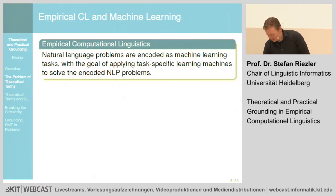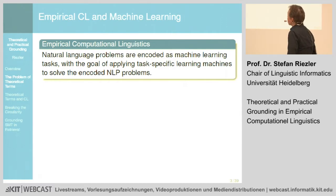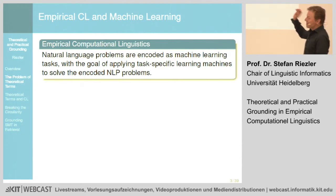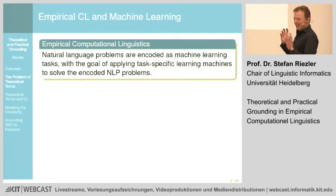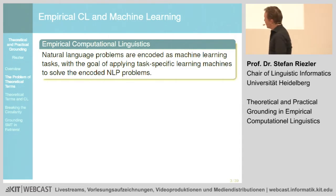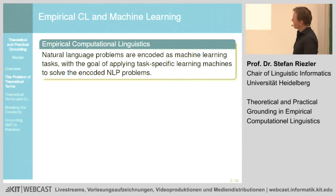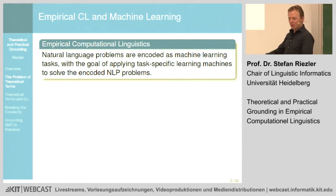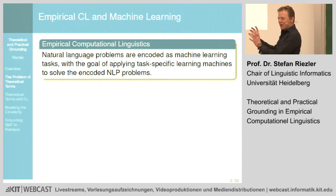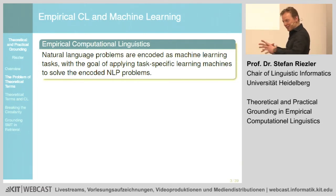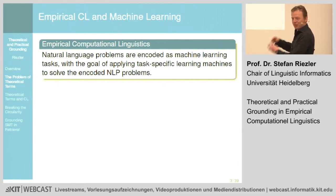The problem I want to address is that in CL, since 10 or maybe 20 years, machine learning has a very central role. Empirical CL can be defined as an application of machine learning to natural language problems. We define our problems in terms of machine learning problems and use machine learning tools to solve them. We basically press our natural language problem into a classification, regression, ranking, or some other problem and use the tools built for those tasks.